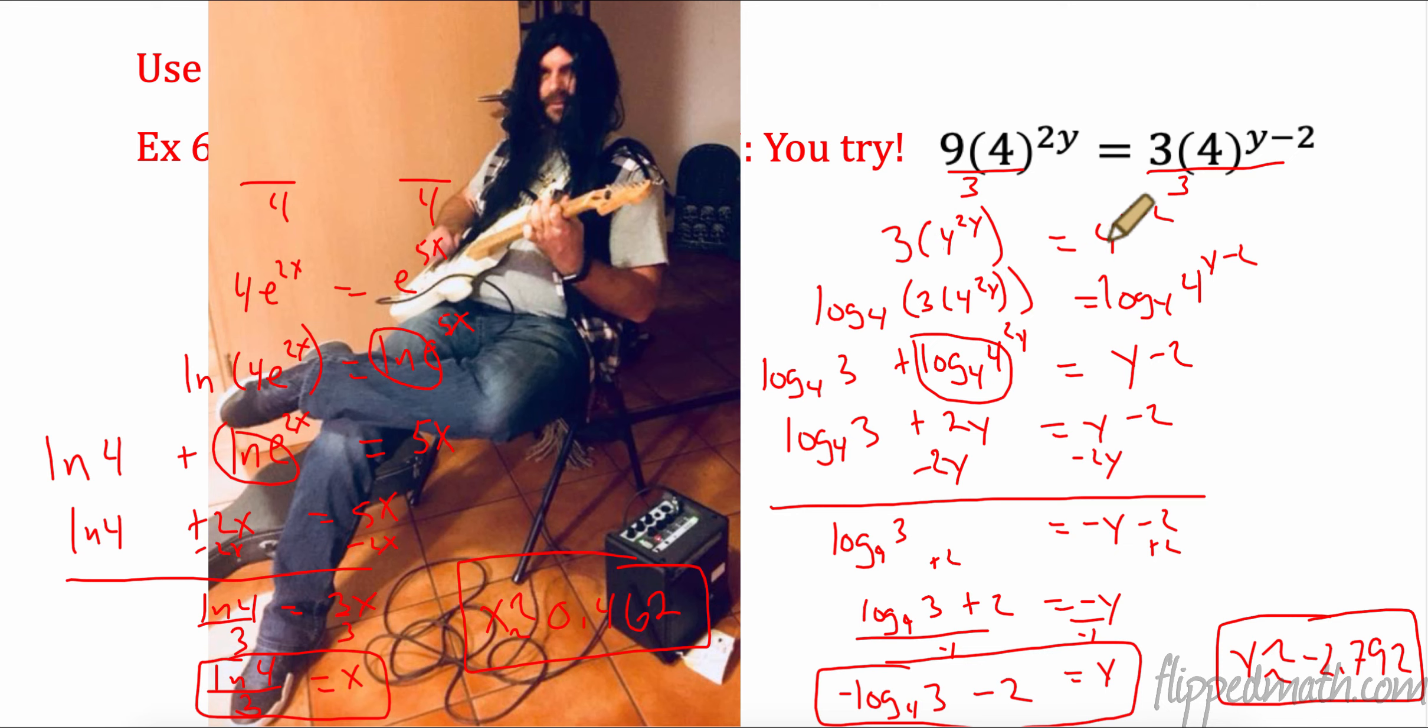So I started by dividing both sides by 3. I've got 3 times 4^(2y) equals 4^(y-2). I knew that I could get rid of this 4 by taking base 4, so I took log base 4 of both sides. I used the product property of logarithms to split these into two things that I'm adding, both base 4. Over here, this canceled right here, and it gave me y minus 2. Now this cancels, and I have 2y. I want to get my y's together, so I subtracted 2y. 1 minus 2 is negative 1. I added over 2, and then last but not least, I divided by negative 1. So I had negative log 4 of 3 minus 2, or approximately negative 2.792.